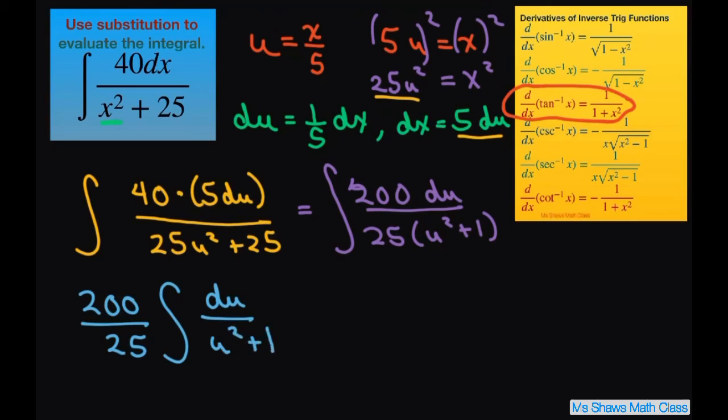Now we can integrate this. So this just equals 8. So we have 8. And this has this form. Inverse tan. So you write inverse tan of u plus c.